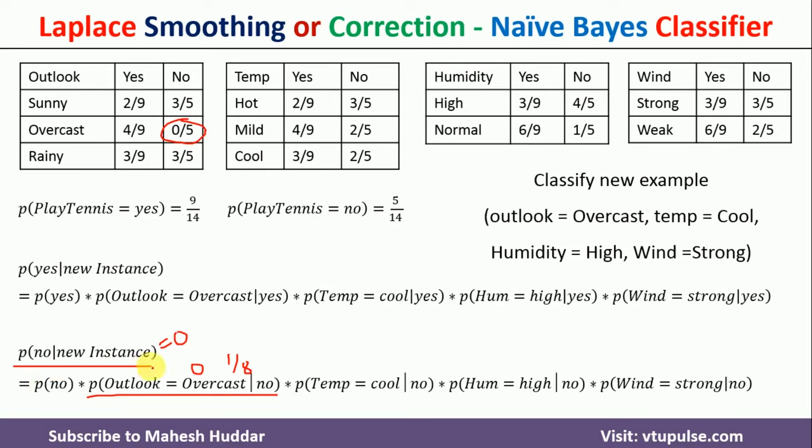Now we will be able to calculate the posterior probability and compare between the two classes — the one with the maximum value will be considered the final class for the new example. In this video, I discussed what is the zero probability problem in the Naive Bayes classifier and how to remove it using Laplace smoothing with a simple numerical example. The complete example is solved in another video — the link is given in the description below. Do follow that video to understand the complete process of calculating prior probabilities, conditional probabilities, and so on.